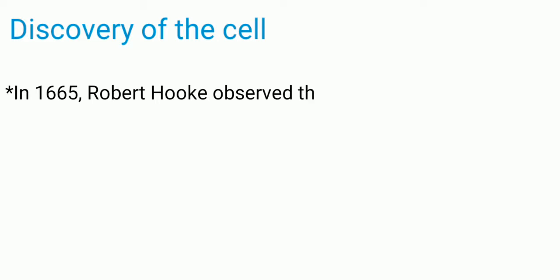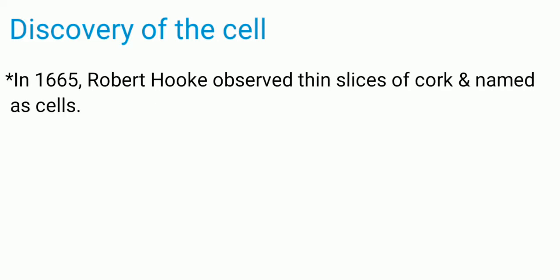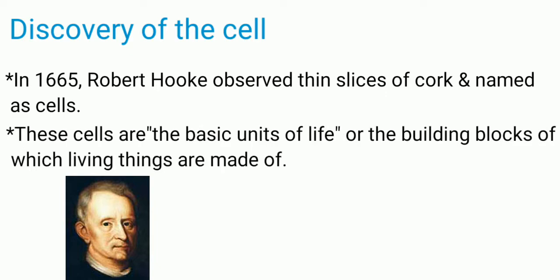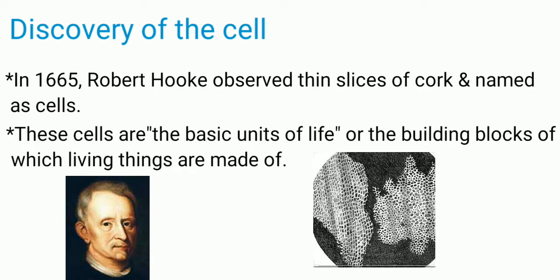In this chapter, first we learn about how the cell was discovered. In 1665, an English scientist Robert Hooke observed thin slices of cork, a substance which comes from the bark of a tree. When he examined it, he saw that it looked much like a honeycomb, consisting of many little boxes. He called these boxes 'cells', from the Latin for 'a little room'.